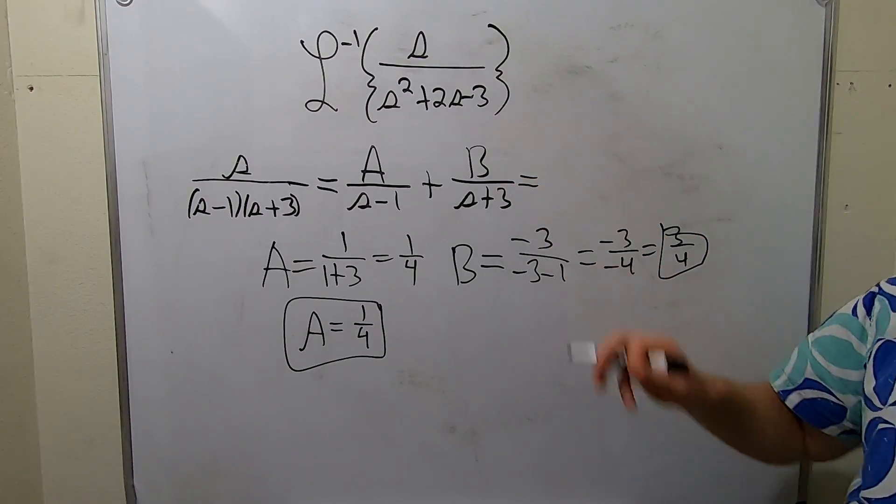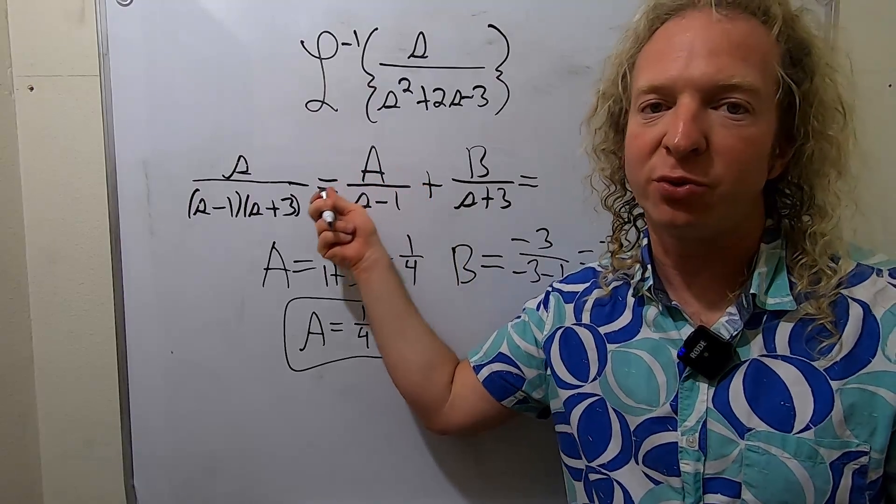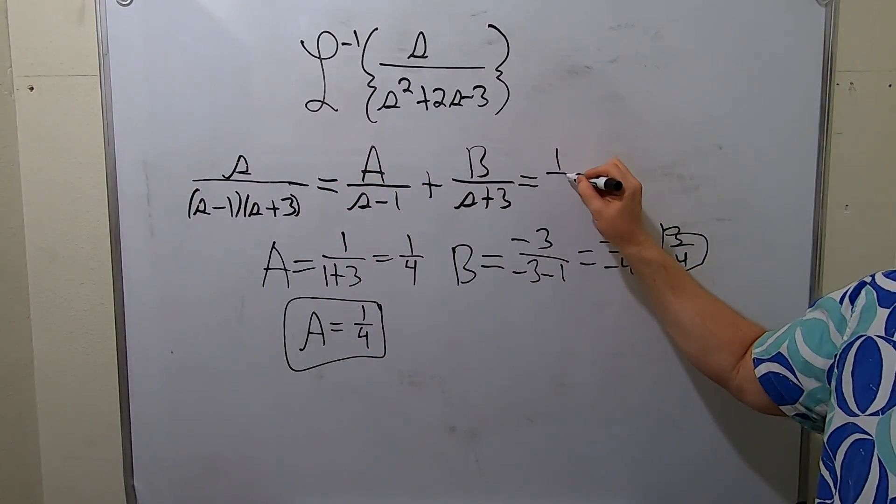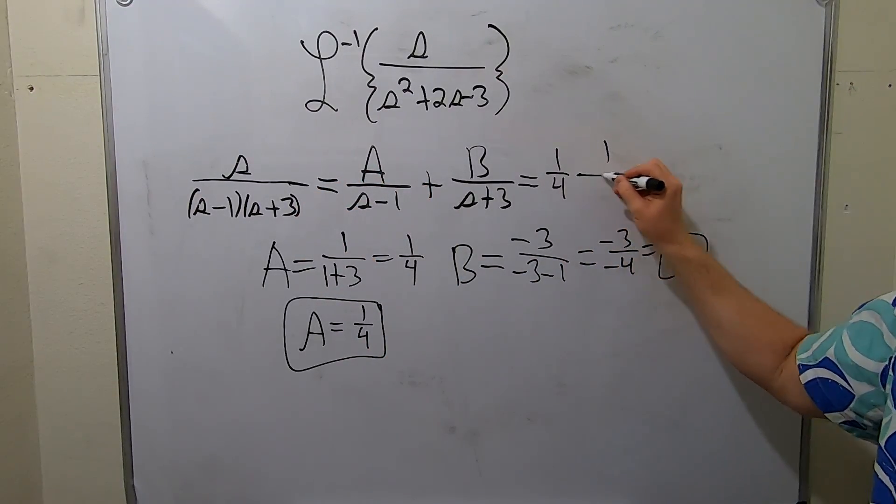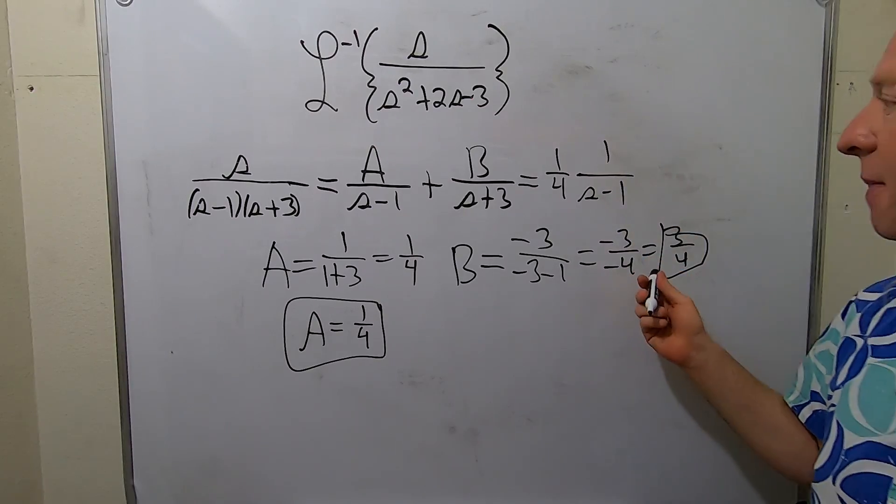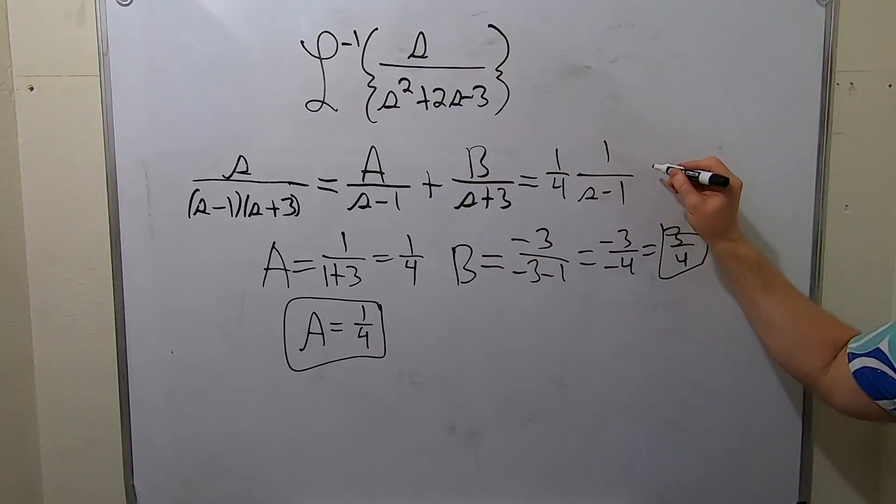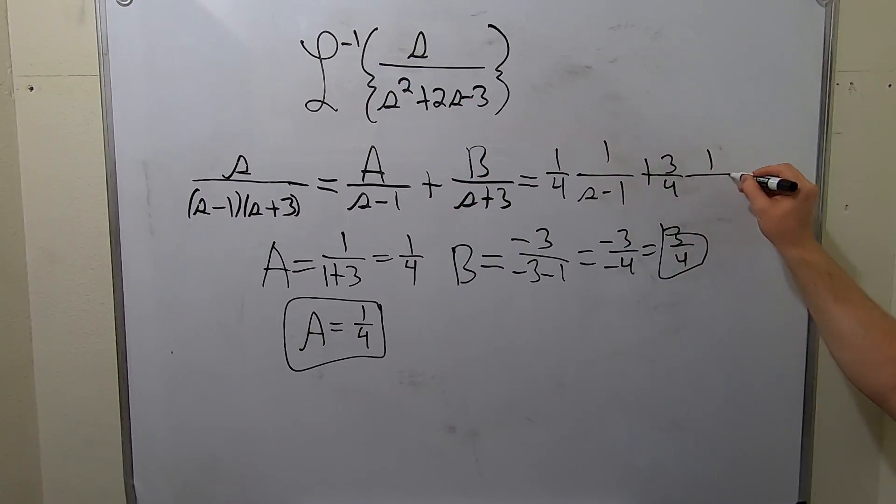So you can write this. A is 1 fourth. You put it up top, but you really put it in the front when you do this. So 1 fourth times 1 over S minus 1. And then B, same thing. You put the 3 fourths in the front. 1 over S plus 3. Good stuff.